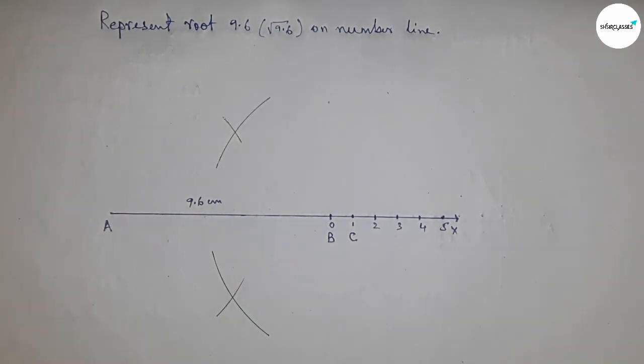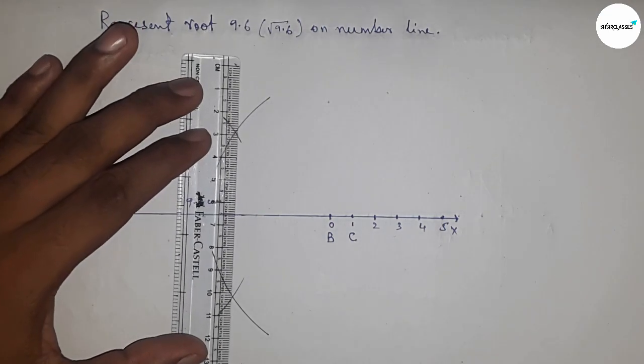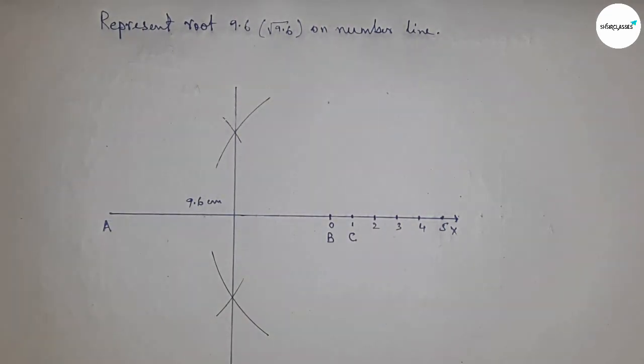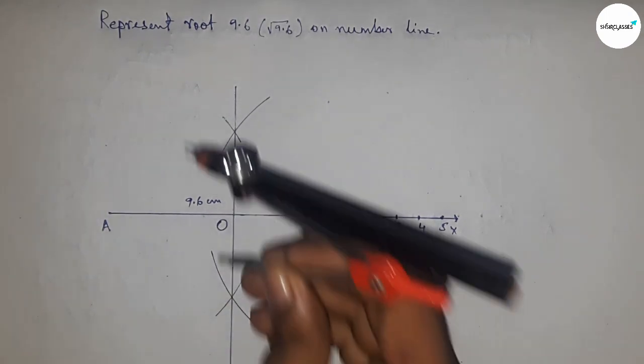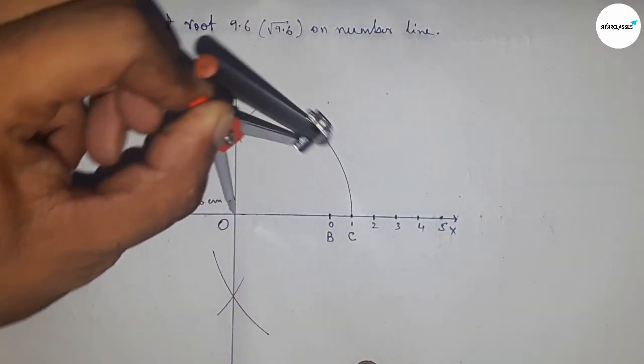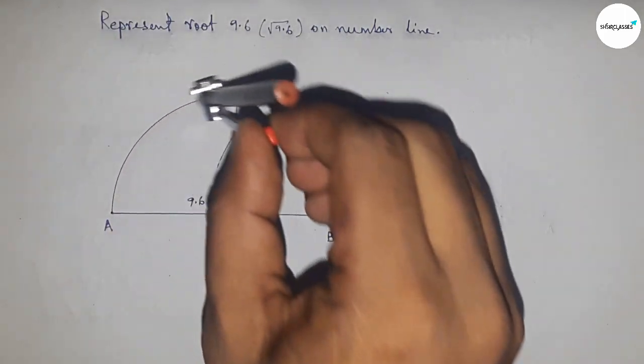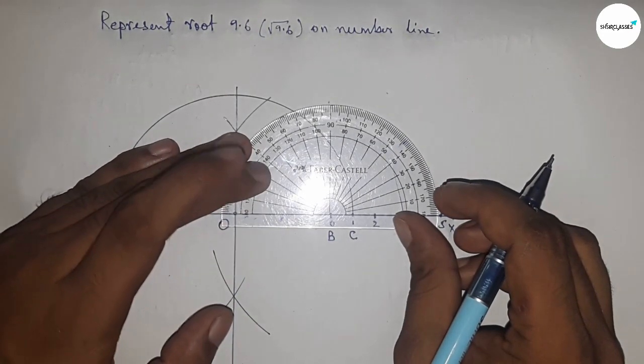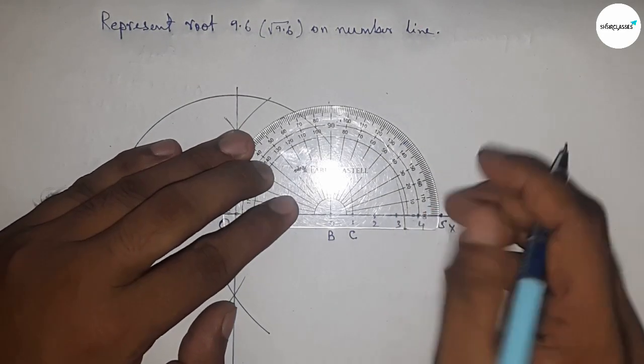Now join these points which meet at point O on the number line. Now take the distance OA and OC to draw a semicircle.